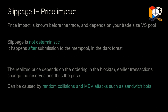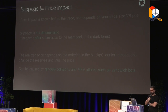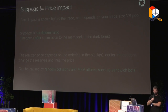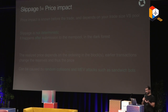Price impact is known before the trade and depends on trade size versus the pool you're trading with on an AMM. Slippage, however, is not deterministic — it happens in the dark forest once you submit the transaction to the mempool, and it's impossible to calculate beforehand. Your realized price depends on the ordering of transactions, which can be affected by random collisions or MEV attacks such as sandwich bots that actively work against you.